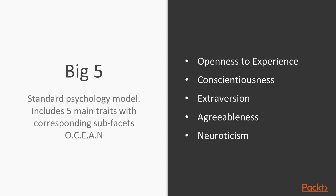The Big Five standard model used in psychology describes your personality using five main traits, each with corresponding sub-facets. Remember this acronym: OCEAN. The first one is openness to experience — how inclined you are to try new experiences, or maybe you are more conservative. The second is conscientiousness — how much thinking or reflection you make before making a decision. The third is extraversion — how is your communication with other people. The fourth is agreeableness — how you are in your relationships with other people. And neuroticism — that is basically how meticulous you are in making some kind of task.